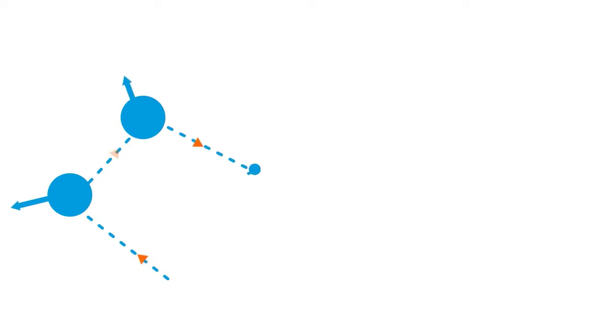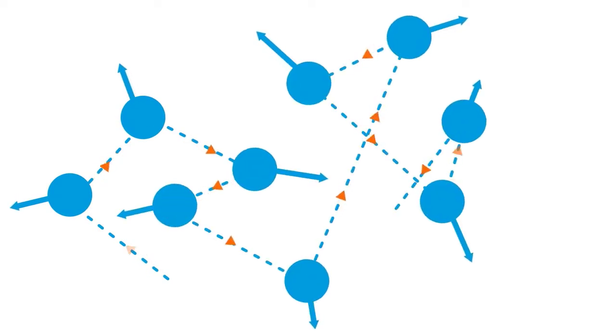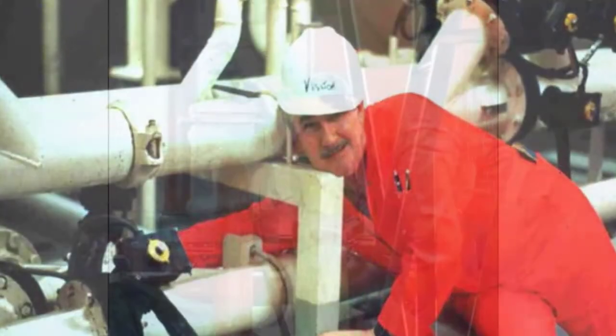In fact, incidents are the result of complex interactions between people, plant and processes. Equipment and activities can be designed to reduce mistakes and manage risk better.